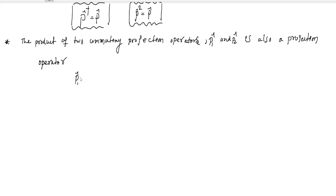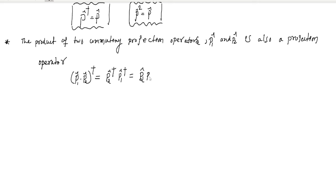So P₁ times P₂ — applying the dagger (adjoint) to this product — after applying the dagger you get P₂† and P₁†, which equals P₂·P₁. Since P₁ and P₂ are Hermitian, applying the reversal rule gives P₂ and P₁.